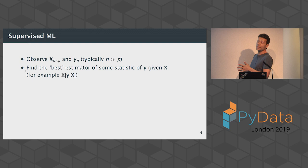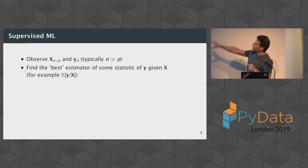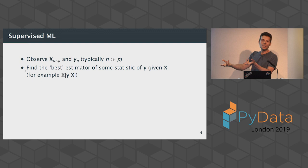In supervised ML, you have one big matrix of predictors, which we call X, and then a vector — let's assume a single outcome — which we call Y. In traditional stats you typically have many more observations than predictors. What machine learning is: you want to find the best estimator of some statistic, such as the average value of Y given the values for the predictors. You build that black box — you input the predictors and it spits out the prediction.